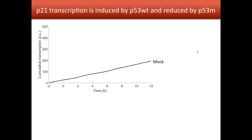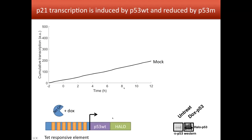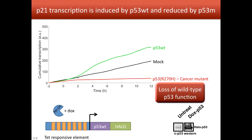Now we want to know what is the impact of p53. In unstimulated cells we have this flat cumulative transcription — the stable rate of production of p21. When we overexpress p53 using a tet-responsive element promoter with wild-type p53, we see p21 expressed at a higher rate — the slope of the cumulative trace is much higher. Interestingly, if we use a dominant negative mutant such as R270H, we completely inhibit p21 expression, resulting in a flat trace with no p21 mRNA produced.